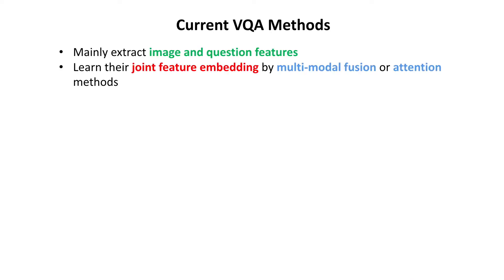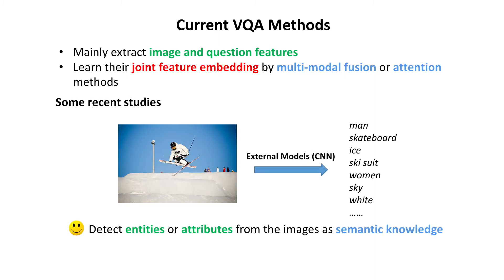Current methods mainly extract image and question features and learn their joint feature embedding by multimodal fusion or attention methods. Some recent studies utilize external models to detect entities or attributes from images, which serve as semantic knowledge.